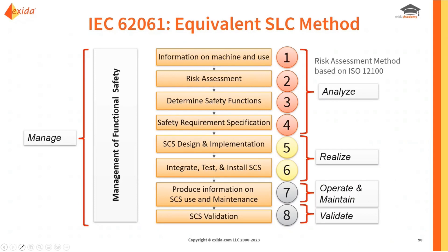IEC 62061 has a similar safety lifecycle where you start with information on the machine and how it's used as the basis for your risk assessment. You identify safety functions and specify requirements. In the realize — or design and implement — phase, you build the safety function, test it, and make sure it meets your SIL requirements. For operations and maintenance, you review the information for use and validation to make sure it's ready to go. The risk assessment methods used in both 62061 and ISO 13849 are based on ISO 12100.